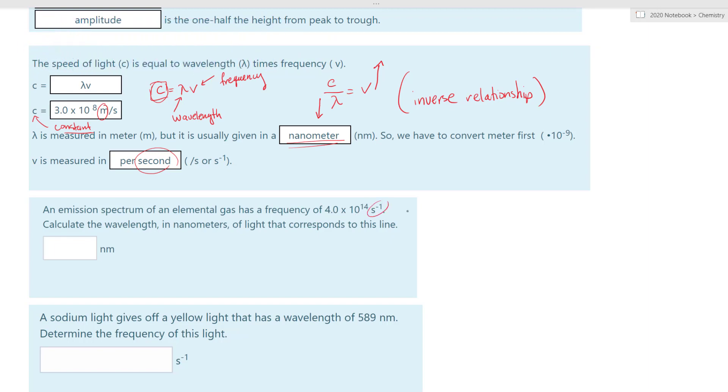An emission spectrum of an elemental gas has a frequency of 4.0 times 10 to the 14 per second. And a lot of times, they write seconds like that. That's basically per second. Calculate the wavelength in nanometers of light that corresponds to this line. Here's the trick. They want it in nanometers. That's probably the trickiest part, but it's also the easiest part. So we have c equals what? Lambda times ν, wavelength times frequency. So in this case, we are solving for wavelength. So wavelength is basically c divided by ν. We just bring this over here.